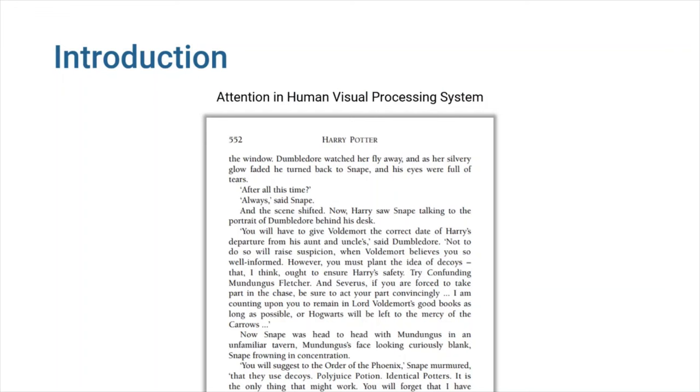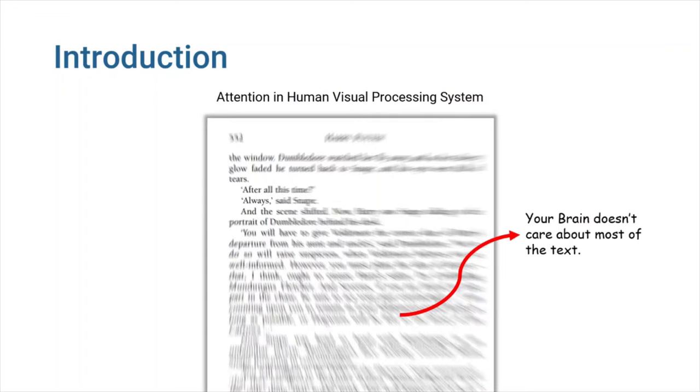Attention mechanism is inspired by human visual processing system. When you read a page in a book, the majority of what is in your field of vision is actually disregarded, and you pay more attention to the word that you are currently reading.